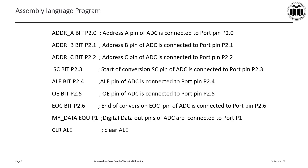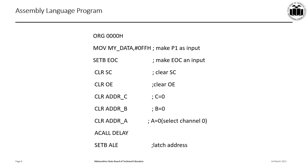CLR ALE clears the ALE pin — that is, P2.4 of 8051 — which is connected to the ALE pin of the ADC, so the ALE signal becomes 0. MOV MyData, #0FFH makes port 1 of 8051 an input port, since the data pins of the ADC are connected there. SET EOC sets the EOC signal. CLR SC clears the start of conversion signal. CLR OE clears the output enable signal. CLR Address C, CLR Address A, CLR Address B makes C=0, B=0, A=0, which selects analog input channel 0 of the ADC.